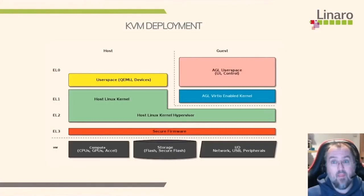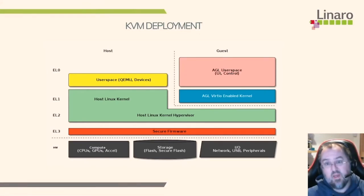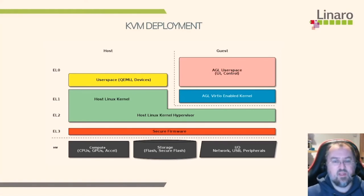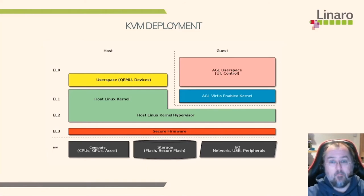Let's talk about the KVM deployment first. Here's what KVM looks like running with virtualization: firmware boots into the host Linux kernel. Because of the way KVM is designed, on ARM the host kernel mostly sits in EL1, but there is a little trampoline that runs in EL2 which is the hypervisor layer. For user space we have QEMU, and then on the guest side that's the AGL user space.